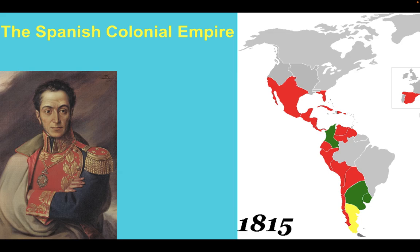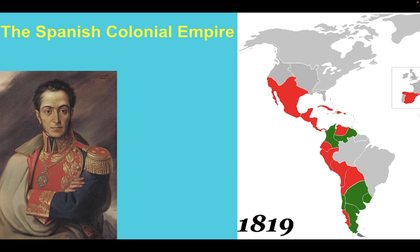Spain also briefly held Taiwan until they sold it to the Japanese. Spain at this time, because of this decline of the Spanish Empire, was still pushing for a pan-Hispanic view, hoping that these nations in South America would still view themselves as at least part of a greater Spanish society.